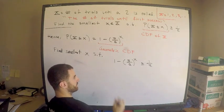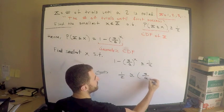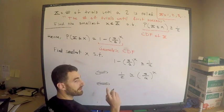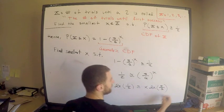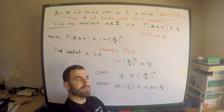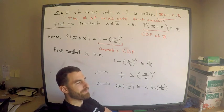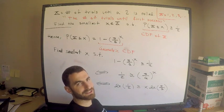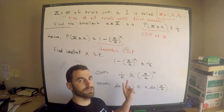There's one subtlety to catch. Bring the five sixths to the x to one side and one half to the other: one half is greater than or equal to five sixths to the x. Take the natural log of both sides: ln of one half is greater than or equal to x times ln of five sixths. Now divide by ln of five sixths — but be careful.